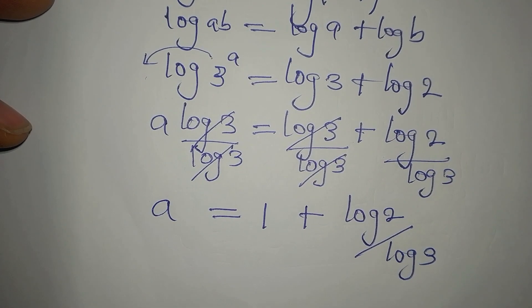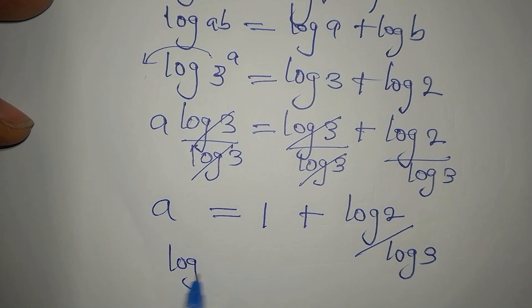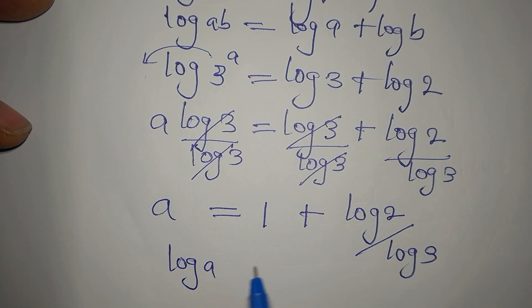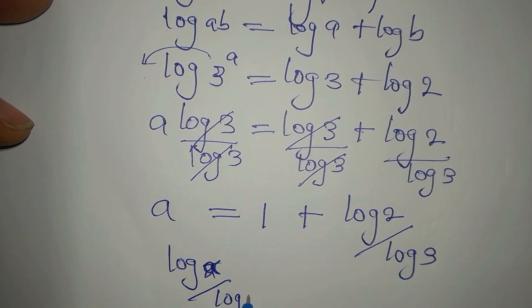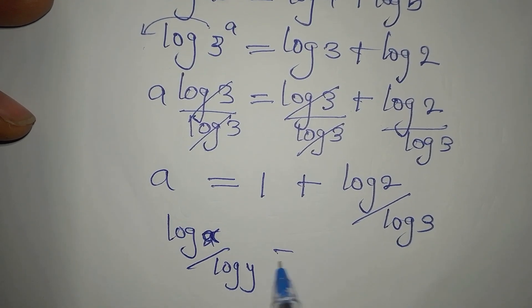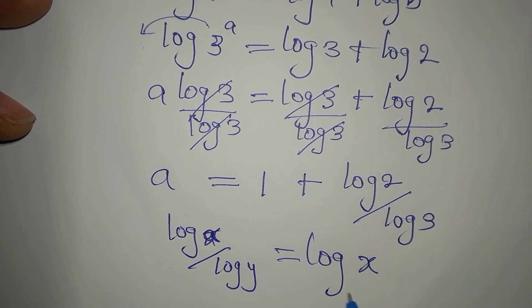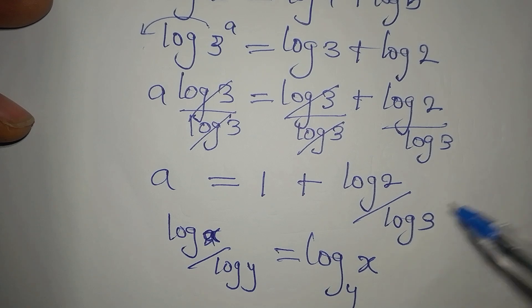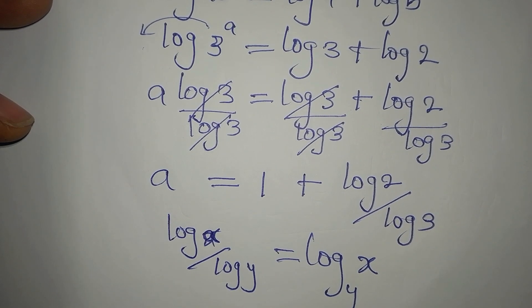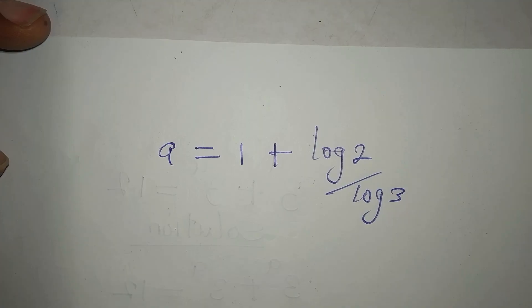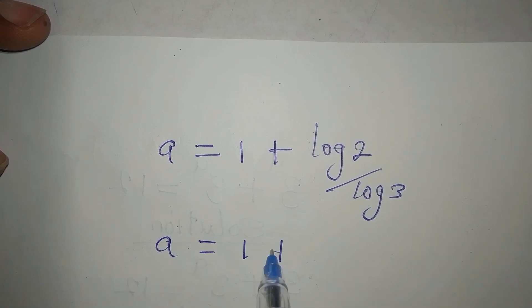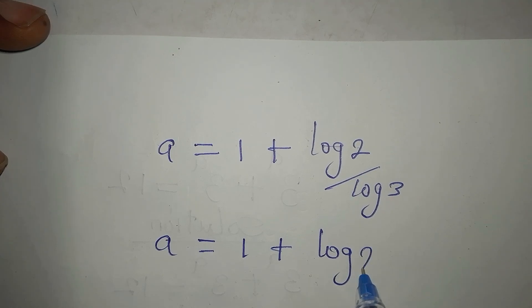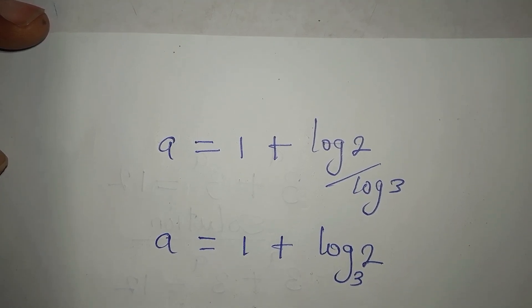Now here again, we can apply change of base. Remember this, log x over log y is the same thing as log x to base y. So if I do the same, this will give me log 2 to base 3. So let's start from there. Okay, so our a now will be equal to 1 plus log 2 to the base of 3. And then from here again, if you want to have your answer in decimal, you can press your calculator to get this in decimal form.